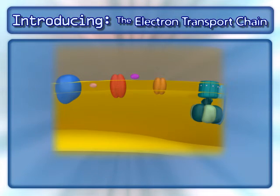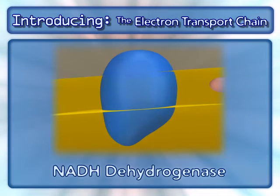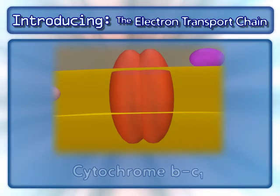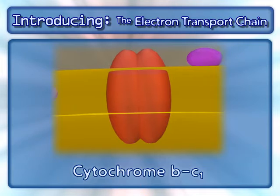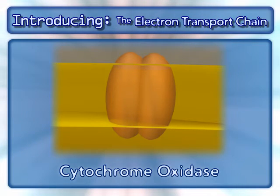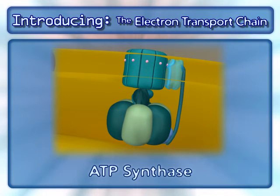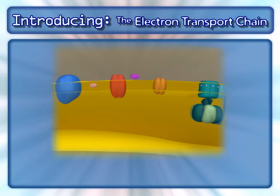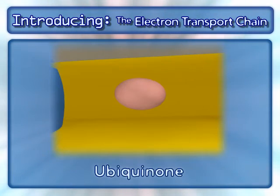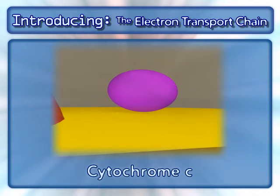The following complexes are found in the electron transport chain: NADH dehydrogenase, cytochrome BC1, cytochrome oxidase, and the complex that makes ATP — ATP synthase. In addition to these complexes, two mobile carriers are also involved: ubiquinone and cytochrome C.